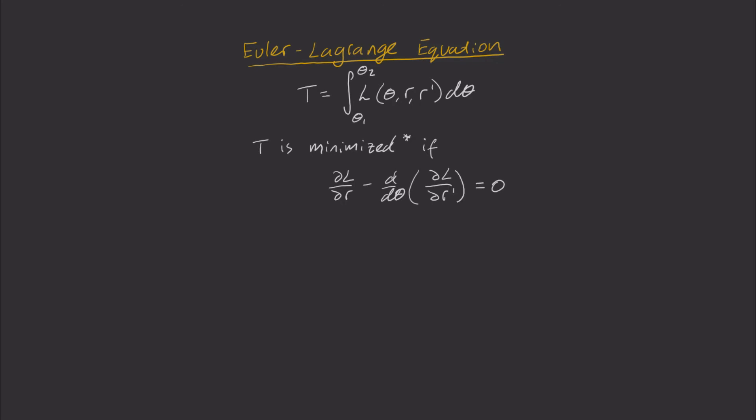But this is actually a bit of overkill, because in our case, we don't have a theta explicitly mentioned in the integral. As a result, we can use the simplified Beltrami identity, which says that T is minimized so long as r satisfies this expression, where c is just some constant. Great. Now we have a formula to find our curve r.